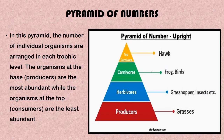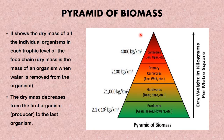There is one trophic level for the producer, one for the primary consumer, one for the secondary consumer, and the final trophic level for the tertiary consumer. Looking at the pyramid of numbers: in this pyramid, the number of organisms are arranged at each trophic level. The organisms at the base — the producers, which are the grasses — are the most abundant, while the organisms at the top, like the hawk which is the top carnivore, are the least abundant.